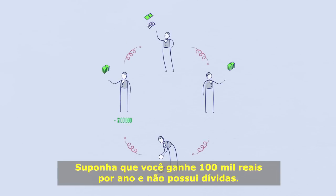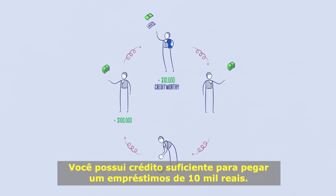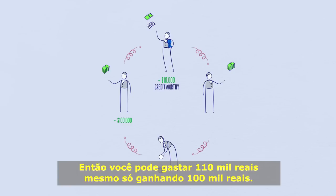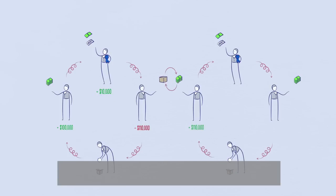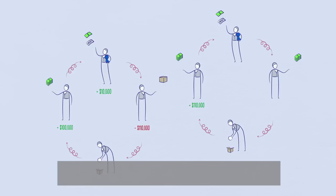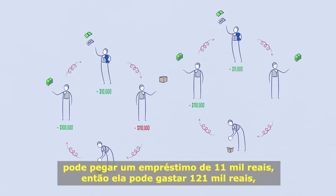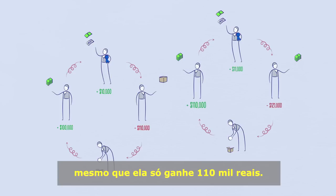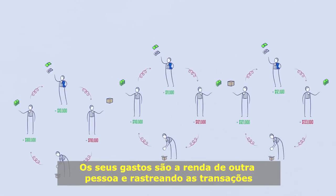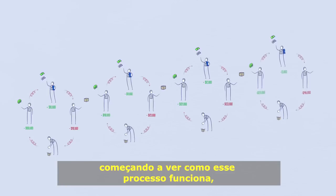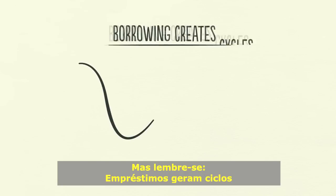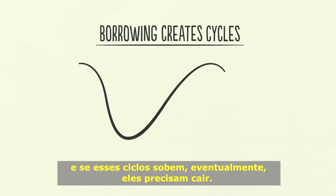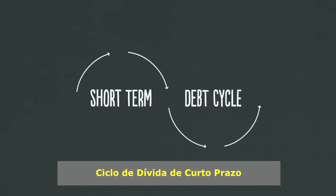Suppose you earn $100,000 a year and have no debt. You are creditworthy enough to borrow $10,000 on a credit card, so you can spend $110,000 even though you only earn $100,000. Since your spending is another person's income, someone is earning $110,000. That person with no debt can borrow $11,000, so he can spend $121,000 even though he has only earned $110,000. By following the transactions, we can see how this process works in a self-reinforcing pattern. But remember, borrowing creates cycles — and if the cycle goes up, it eventually needs to come down. This leads us into the short-term debt cycle.